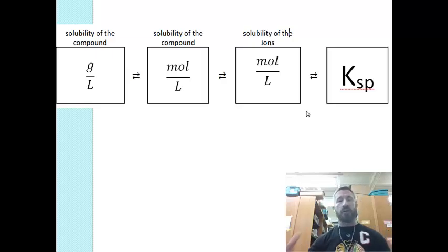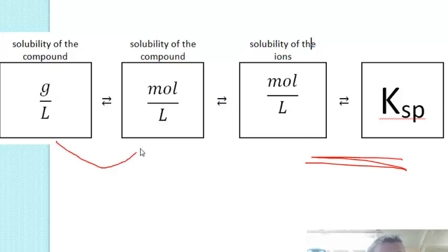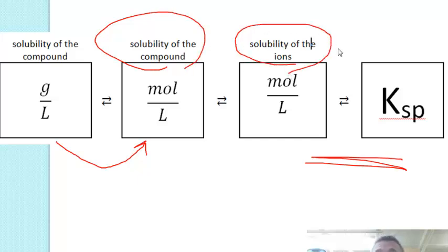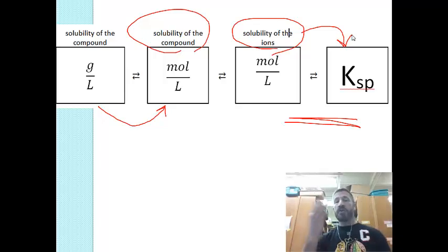Let's do some problems. Write down these three boxes and what they mean — this is extremely important. Most problems will involve going between two things: the solubility of the ions and the KSP. One thing we won't focus on today is converting from solubility in grams per liter to moles per liter — you simply divide by the molar mass. Today we'll concentrate on: if we have the solubility of the compound, how that relates to the solubility of the ions, and how we use ion solubility to find KSP. The arrows go both ways — we'll go from solubility to KSP and from KSP back to solubility.